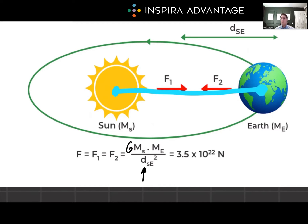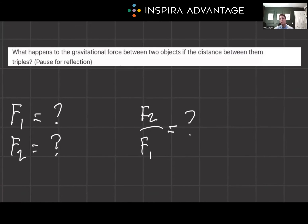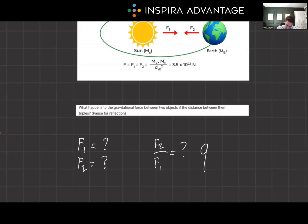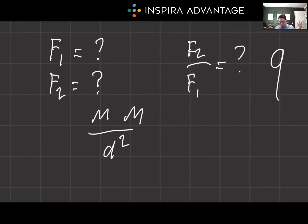If you double the distance between two objects, the gravitational force drops by a factor of four. In uniform circular motion, such as the Earth orbiting the Sun, the gravitational force provides the necessary centripetal force to maintain orbit. Example problem: what happens to the gravitational force if the distance between two objects triples? According to Newton's law, the gravitational force should be reduced by a factor of nine. Let's look at that formula — we have the masses over distance squared, and the masses aren't changing, so let's plug in some numbers — the easiest approach on the MCAT.